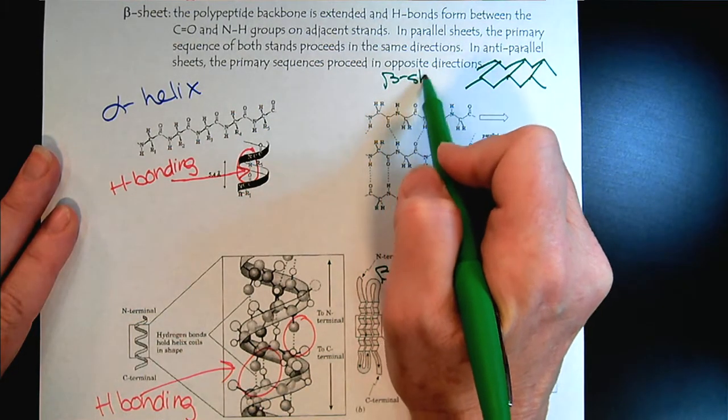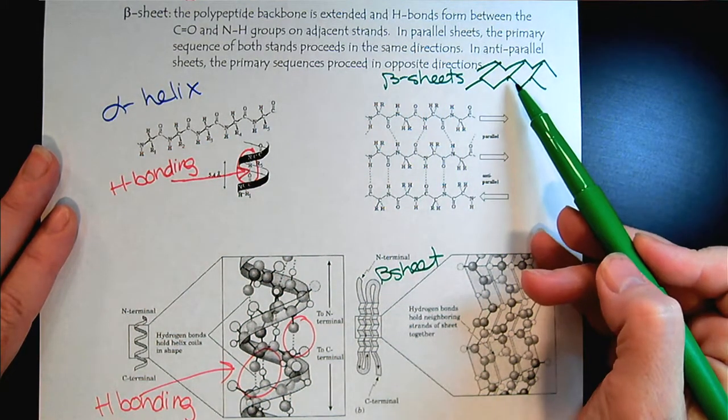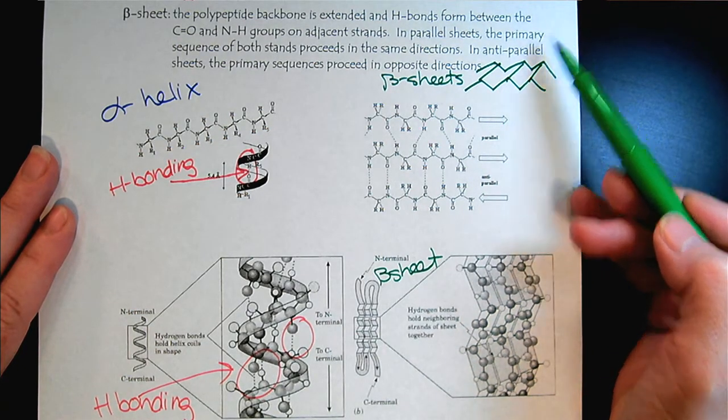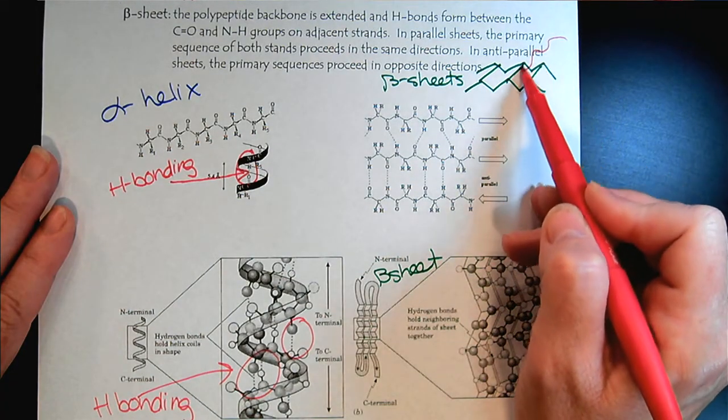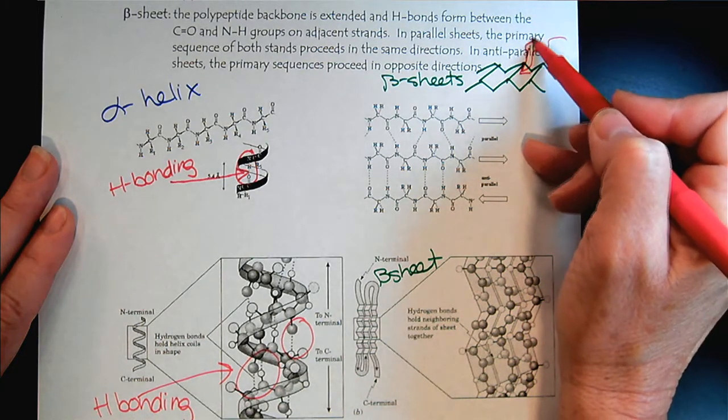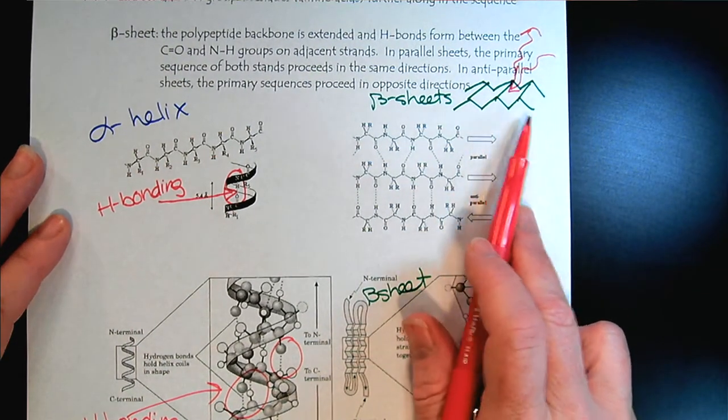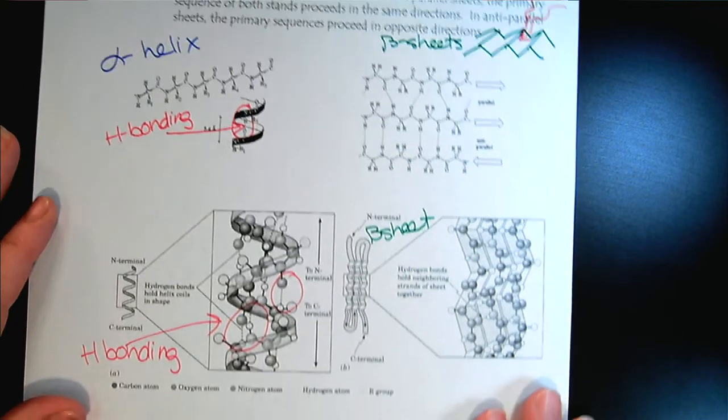The beta sheets, we'll see that silk and spider webs are formed with beta sheets. That's why they're so iridescent. As the light comes in and hits the silk or the spider web, it gets reflected back.